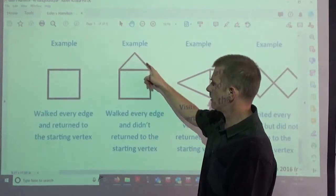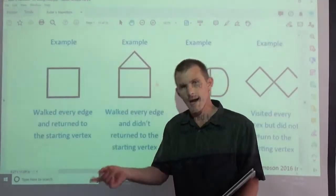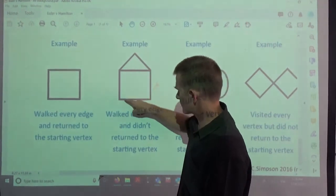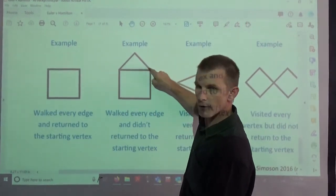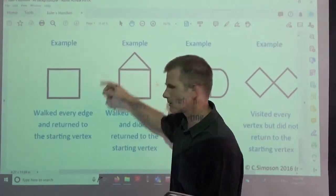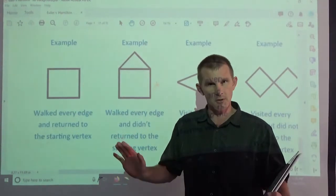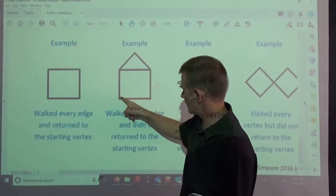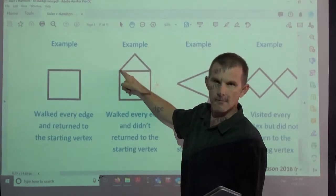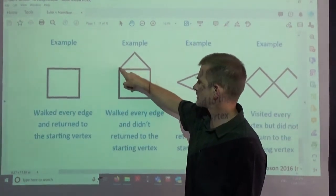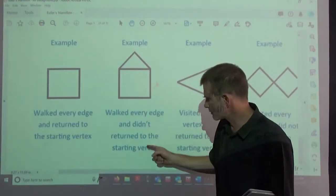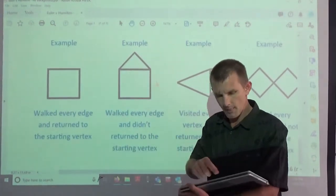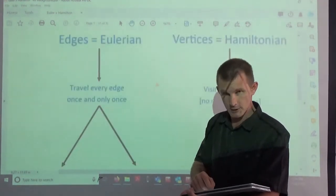Notice that there are two odd vertices, so that'll be traversable but I must start at one of those odd vertices. I must start here or here and I will finish at the other one. Watch: start here, up there, down, down across, up and back to there. Notice where I finished, but I traced every edge. It doesn't matter that I went through the same vertices more than once, that's okay, but I traced every edge once.